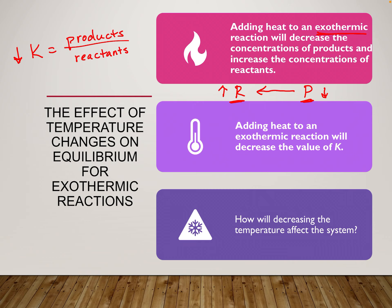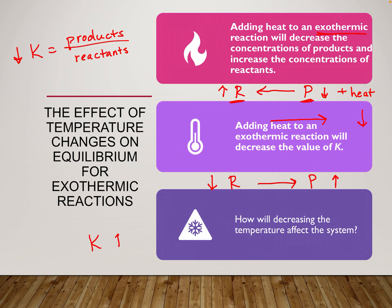The opposite is also true: if we decrease the temperature for an exothermic reaction — which has plus heat on the product side — that causes the reaction to shift towards what we removed. Shifting right means an increase in products and a decrease in reactants, so K would increase. The key is always writing plus heat on the correct side so you can treat it just like any other reactant or product.